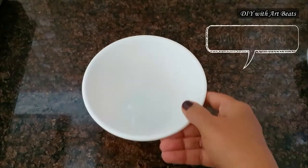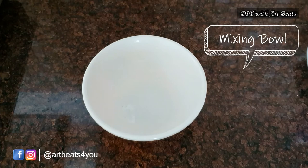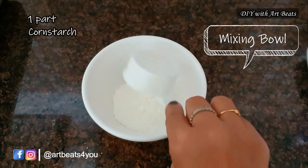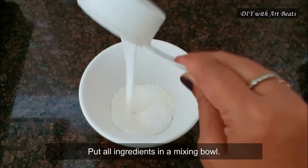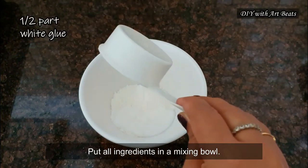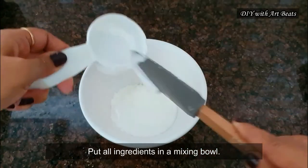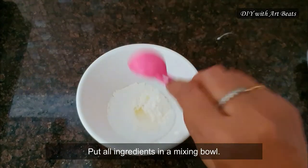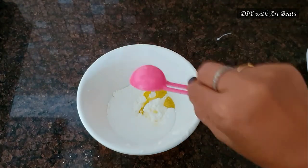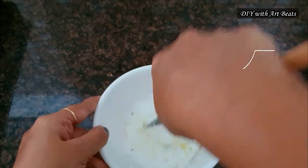The ratio of cornstarch and glue is 2 to 1 here. In a mixing bowl I am taking one part of cornstarch and half part of glue, adding oil and vinegar also. Now we will mix it.